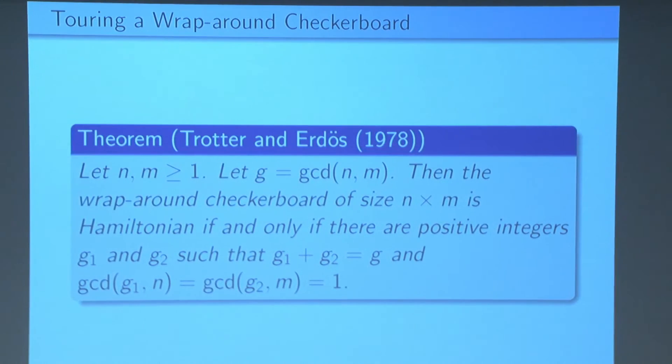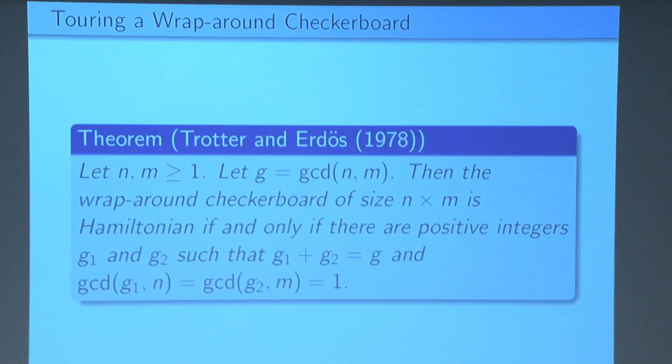Now this problem has been solved, which of these are Hamiltonian? So Trotter and Erdos showed that a wraparound checkerboard of size n by m is Hamiltonian given certain conditions about the greatest common divisor of n and m. Okay so how does this relate to our problem? Well we're considering a similar checkerboard, and to show how it's similar we need to make the observation that the wraparound checkerboard is in fact a checkerboard on a torus.